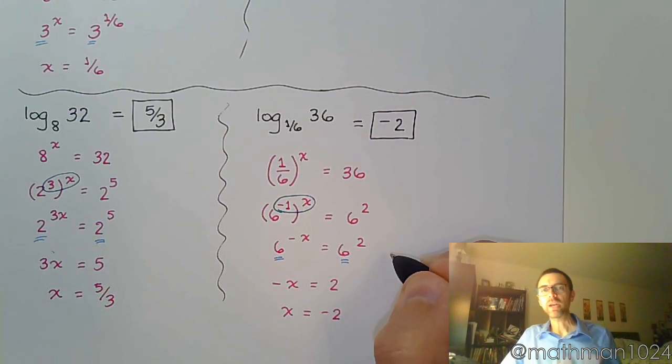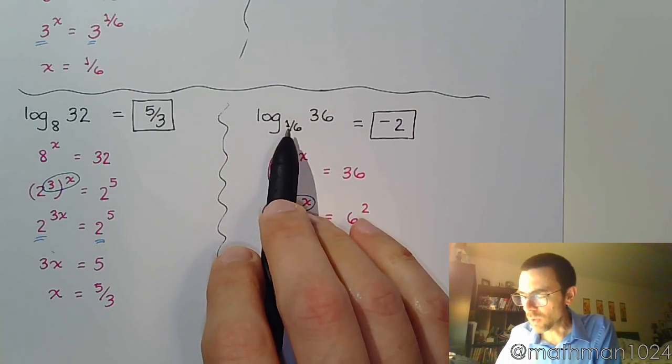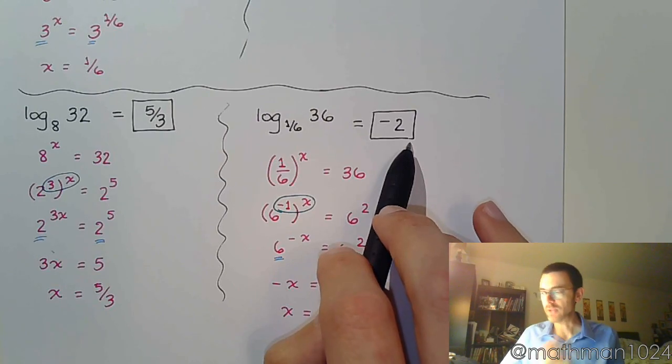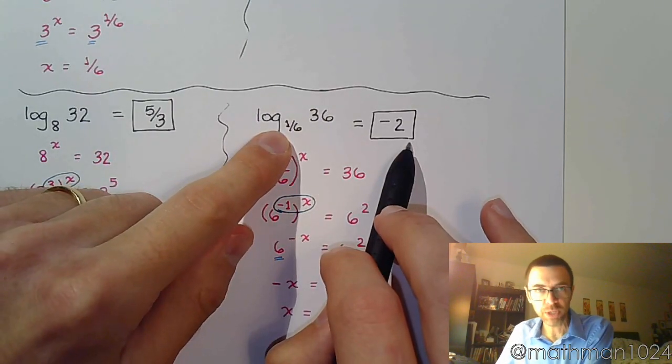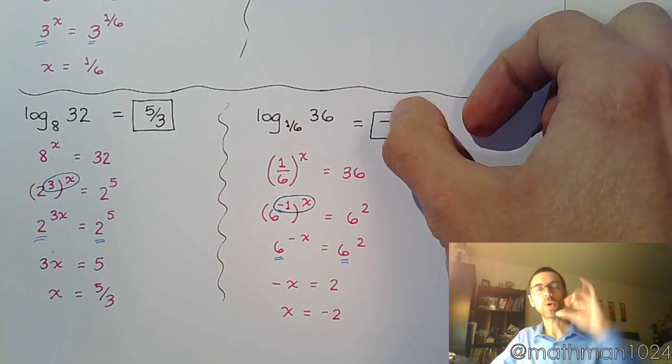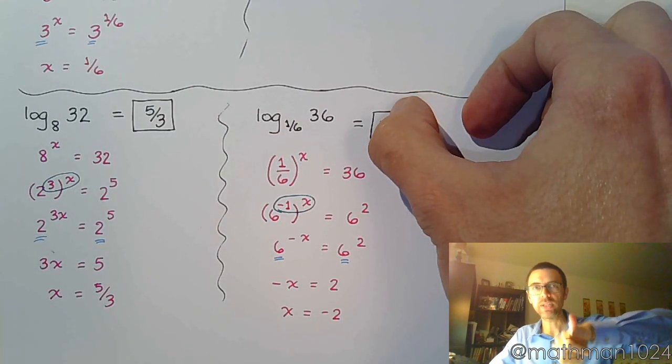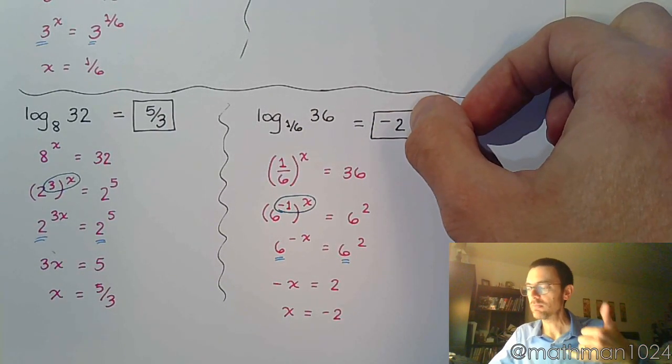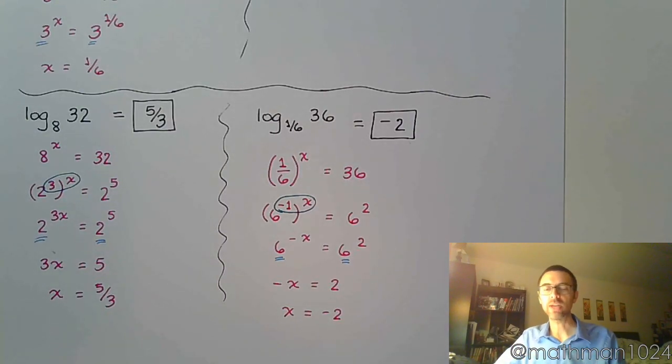And if you think about it, it makes sense. Because if I raise 1 sixth to the negative second power, I get 36. Because do it piece by piece. 1 sixth to a negative power. Well, a negative power turns you upside down. So it's going to turn the 1 over 6 into positive 6. And then the square, when you square the 6, you get 36. So everything checks out. Now, in the next video, we're going to see some very basic logarithmic equations. So, see you then.